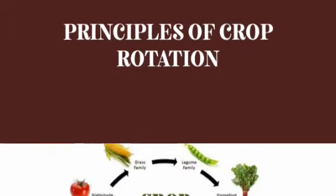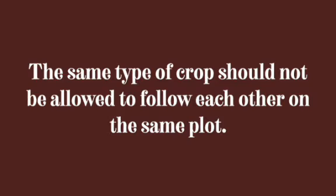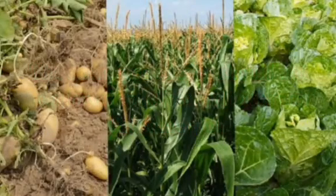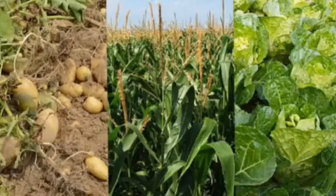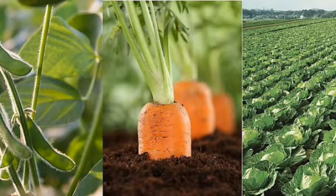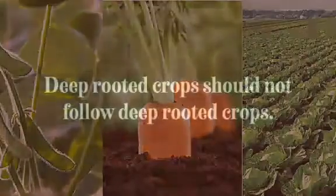The principles of crop rotation are the guides that must be followed for good productivity. The first principle is that the same type of crop should not be allowed to follow itself on the same plot. For instance, potato should not follow potato. After planting potato on a particular plot, you need to change it — you can plant maize or leguminous crops such as cowpea. Similarly, if you plant carrots this year on a particular plot, you cannot plant carrots on the same plot next year; there is need to rotate it.